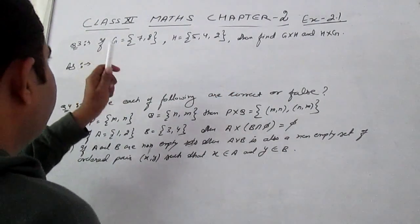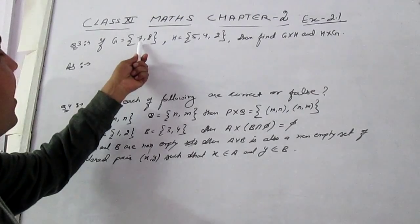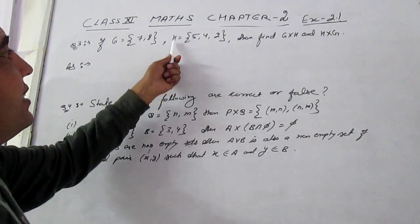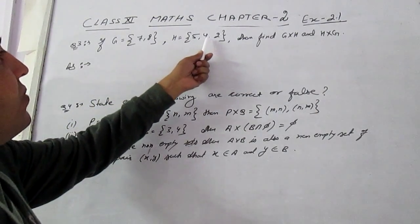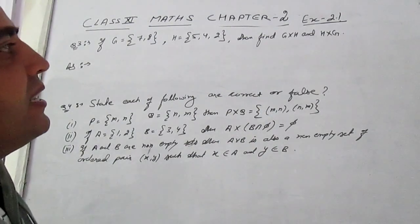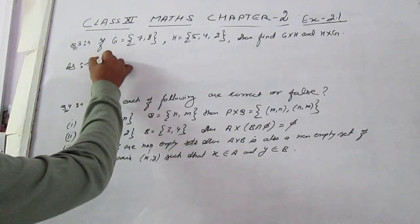Yes, exercise 2.1 question number 3. If Z is a set with elements 7, 8, H set has elements 5, 4, 2, then find G cross H and H cross Z.